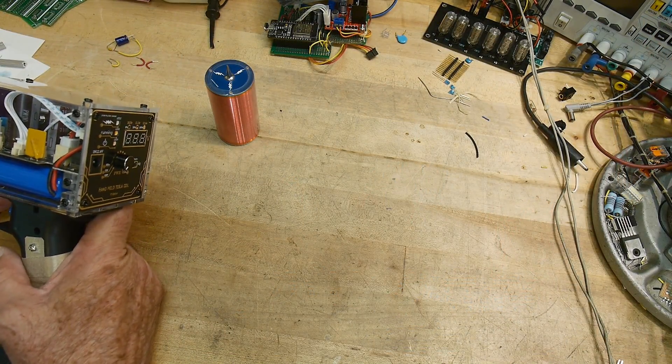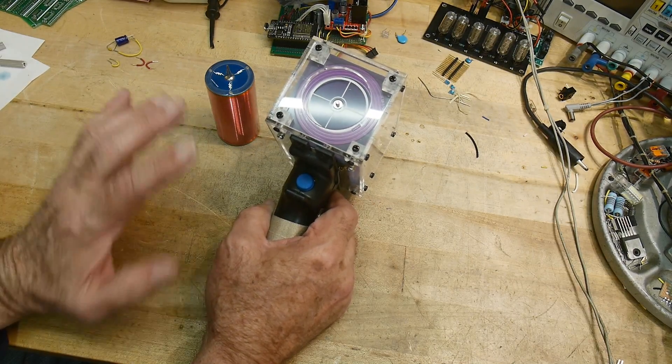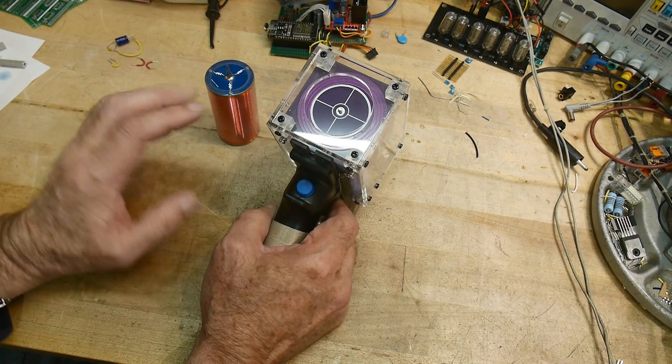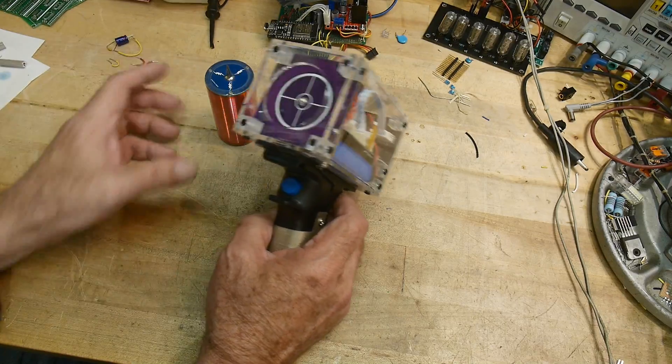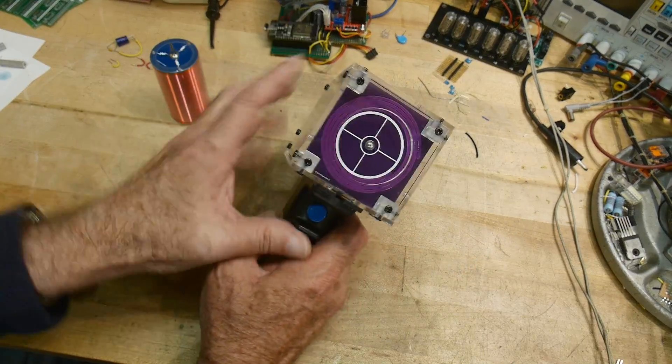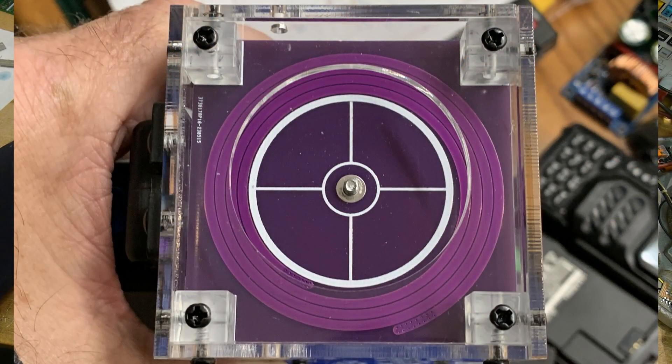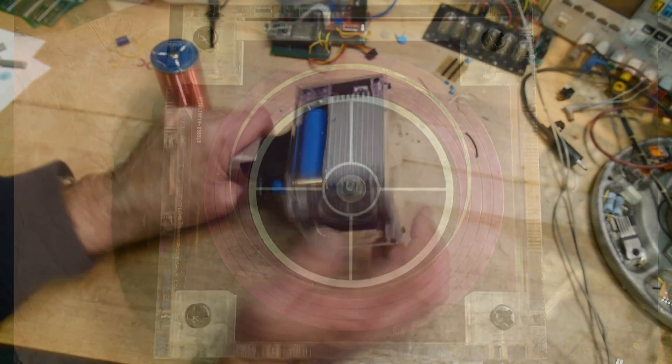So the way that the transformer works, this hundred turn transformer, is you need primary windings. And you go, well, where are the primary windings? Well, primary windings are here on the circuit board. There's actually some traces. So there's four turns. So it's a four turn primary right on this PC board.